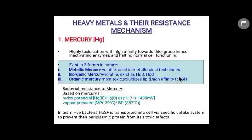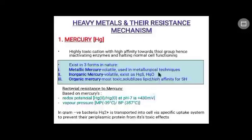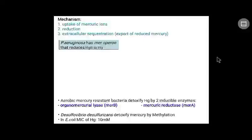Bacterial resistance towards mercury is generally based on two properties: redox potential and vapor pressure. In gram-negative bacteria, mercury ions are transported into the cell via a specific uptake system to prevent periplasmic proteins from toxic effects. The mechanism follows: uptake of mercuric ions, reduction, and finally extracellular sequestration — that is, export of reduced mercury outside the cell and into the environment.